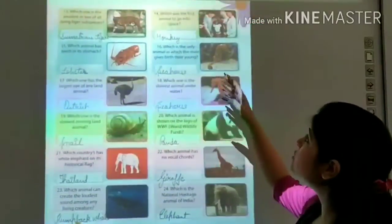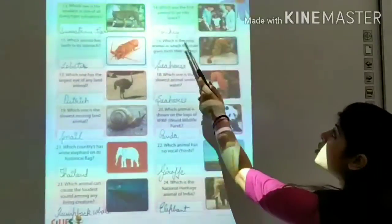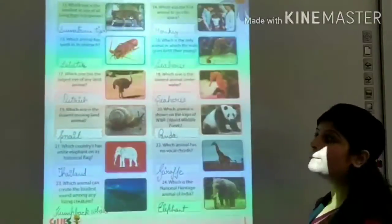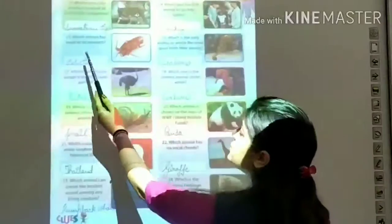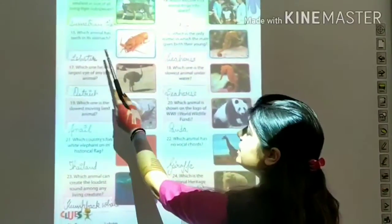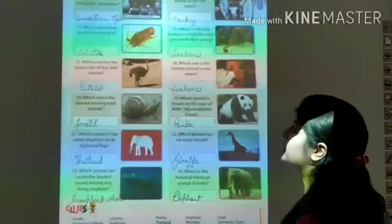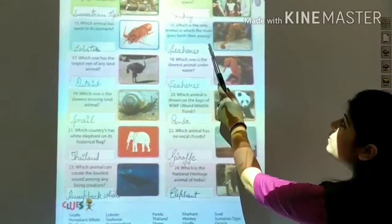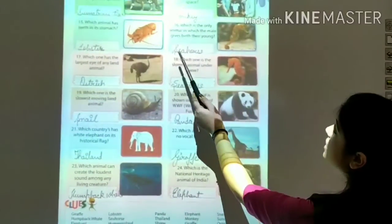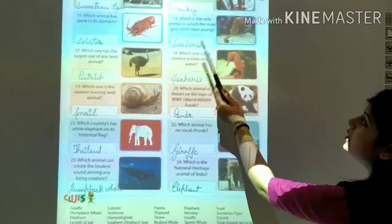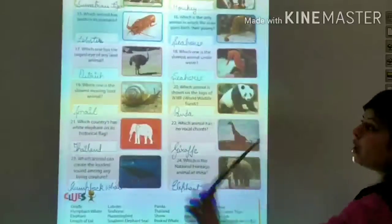Next question, which was the first animal to go into space? It's monkey. Which animal has teeth in its stomach? It's lobster. Which is the only animal in which the male gives birth to their young? It's seahorse.